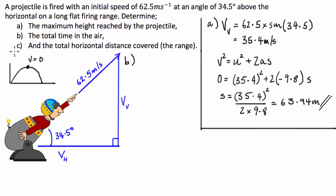And what we're going to use here, we're going to exploit exactly the same property of the maximum height, that the velocity is zero there. And we're going to use the formula V equals U plus AT. And V is zero, is equal to U, which is 35.4, plus negative 9.8 T.